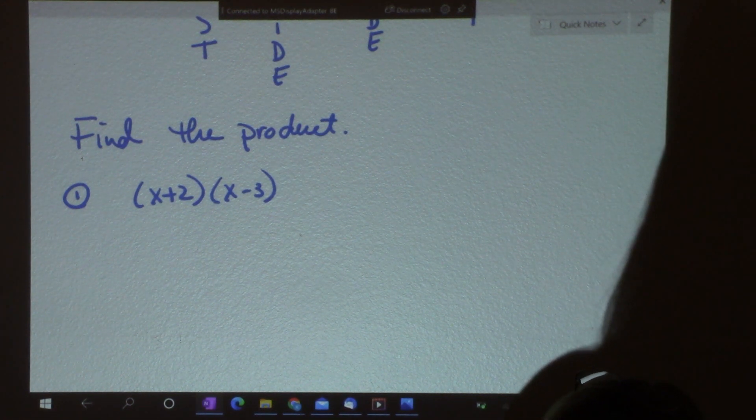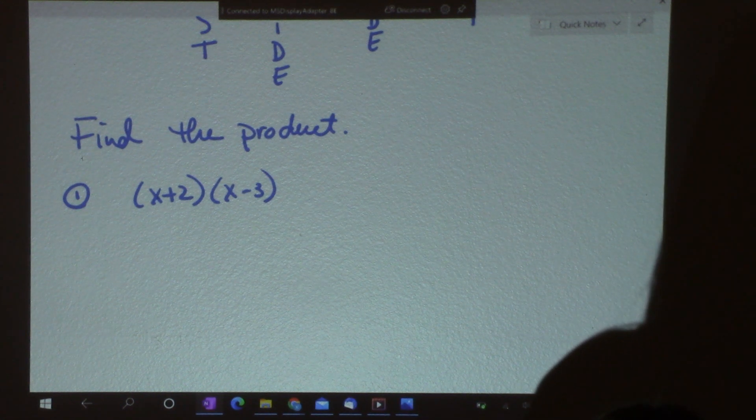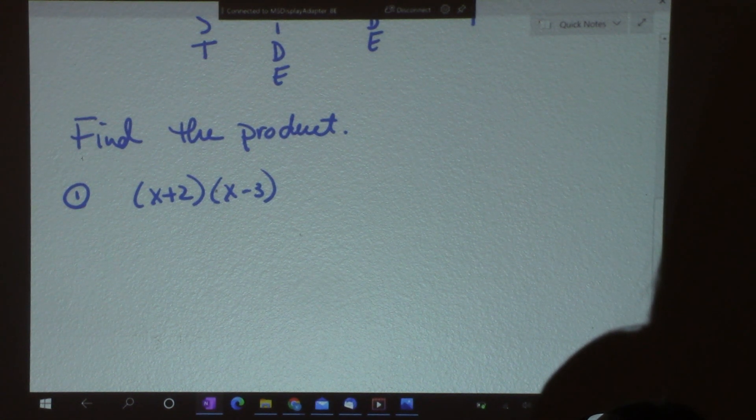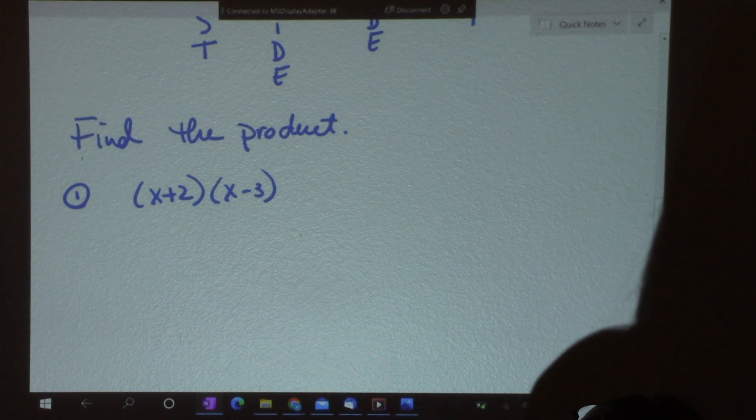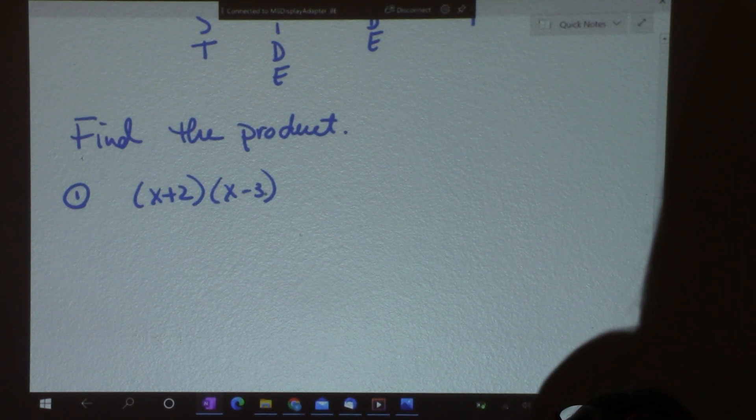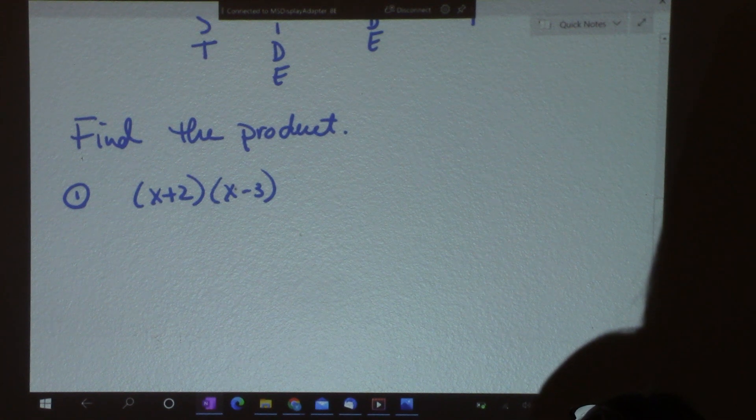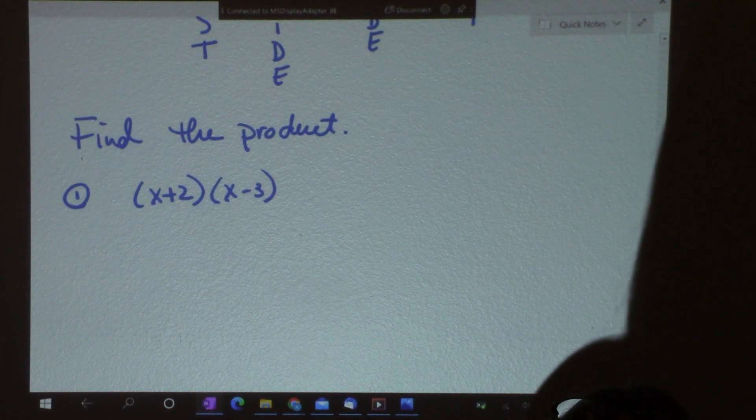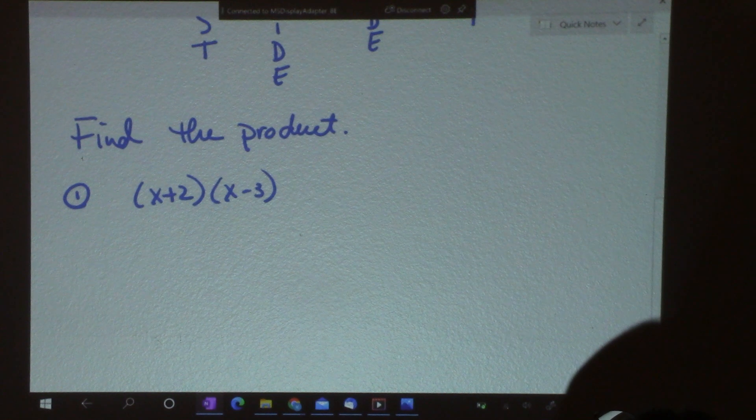You multiply every term by every other term. Otherwise, you're not getting the full answer. So this x has to multiply by 2 and x and 3. This 2 has to, well, this x has to multiply by x and negative 3, this 2 has to multiply by x and negative 3, and so forth. It's really hard to keep track of this.